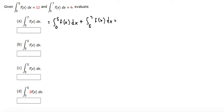Now we know from 0 to 5 is equal to 12 and from 5 to 7 is equal to 4. So we'll substitute those in and add them up, and we get 16 for our final answer.